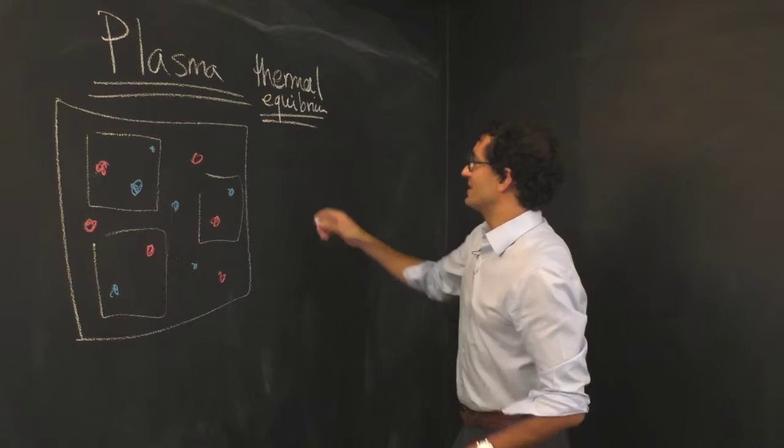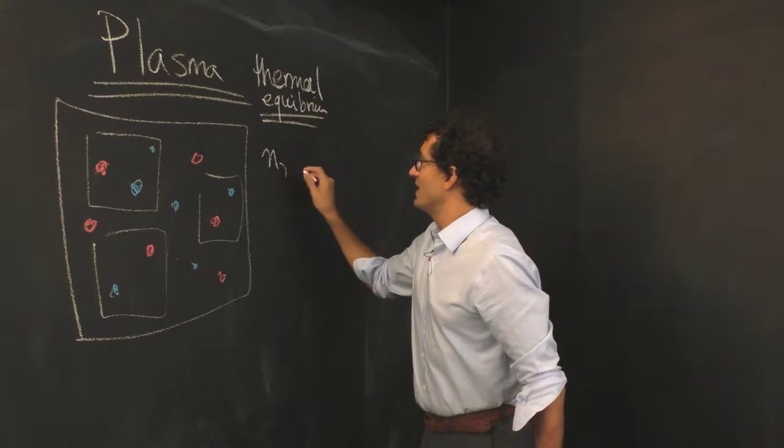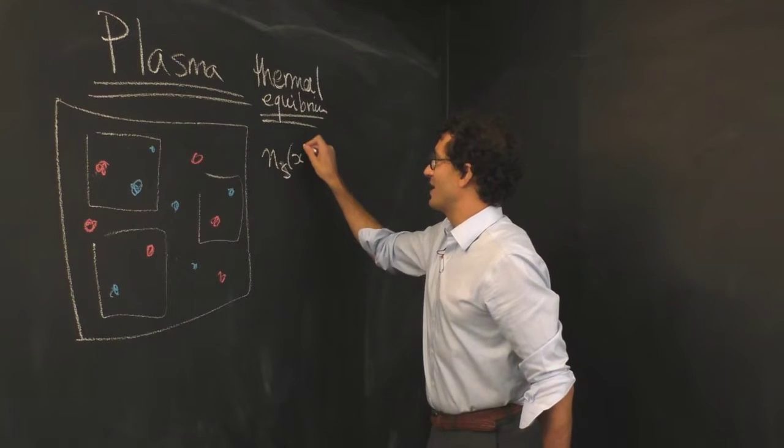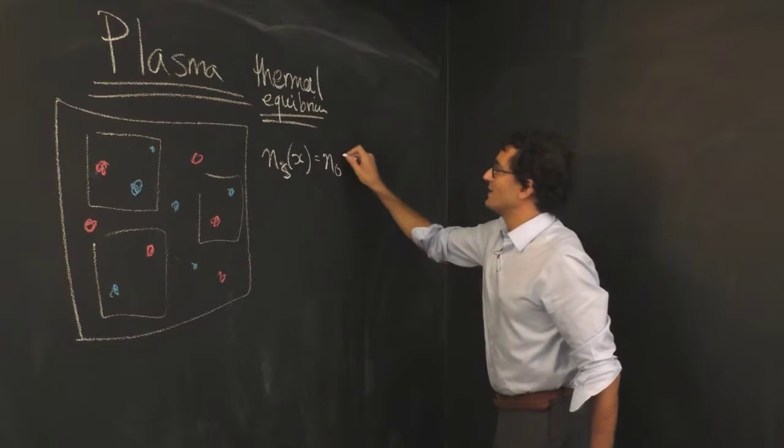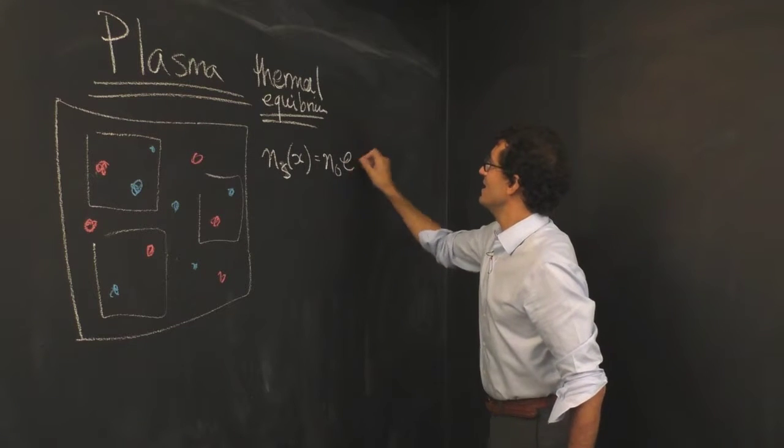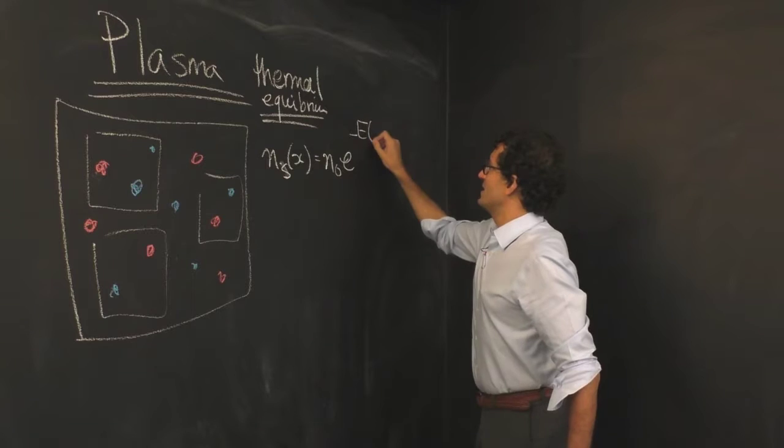So thermal equilibrium, what we're going to say, is that the population of each species, the density of each species at some point x, is equal to the overall density of that species times e to the negative energy that that species would have if it sat at point x divided by kT.